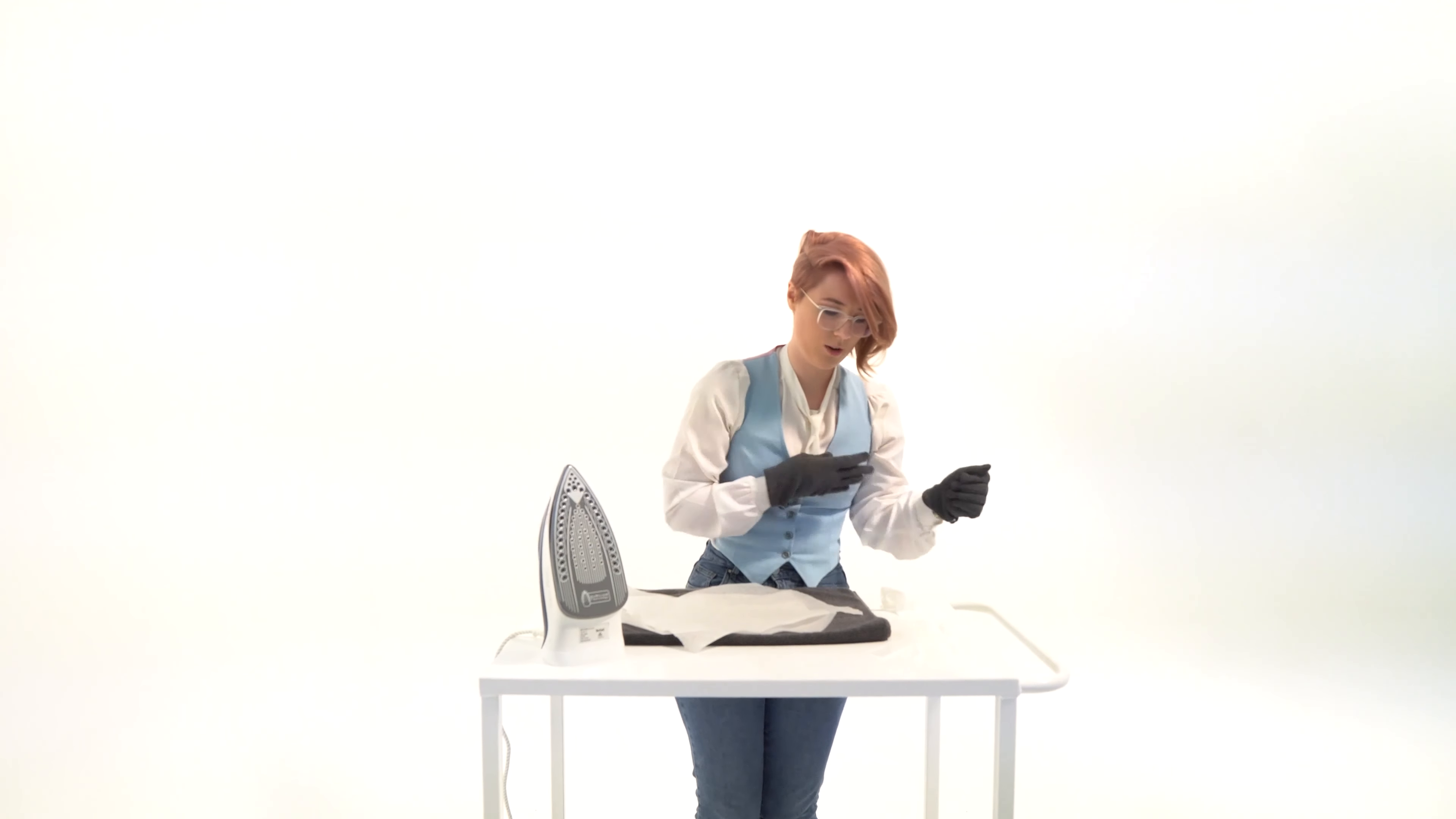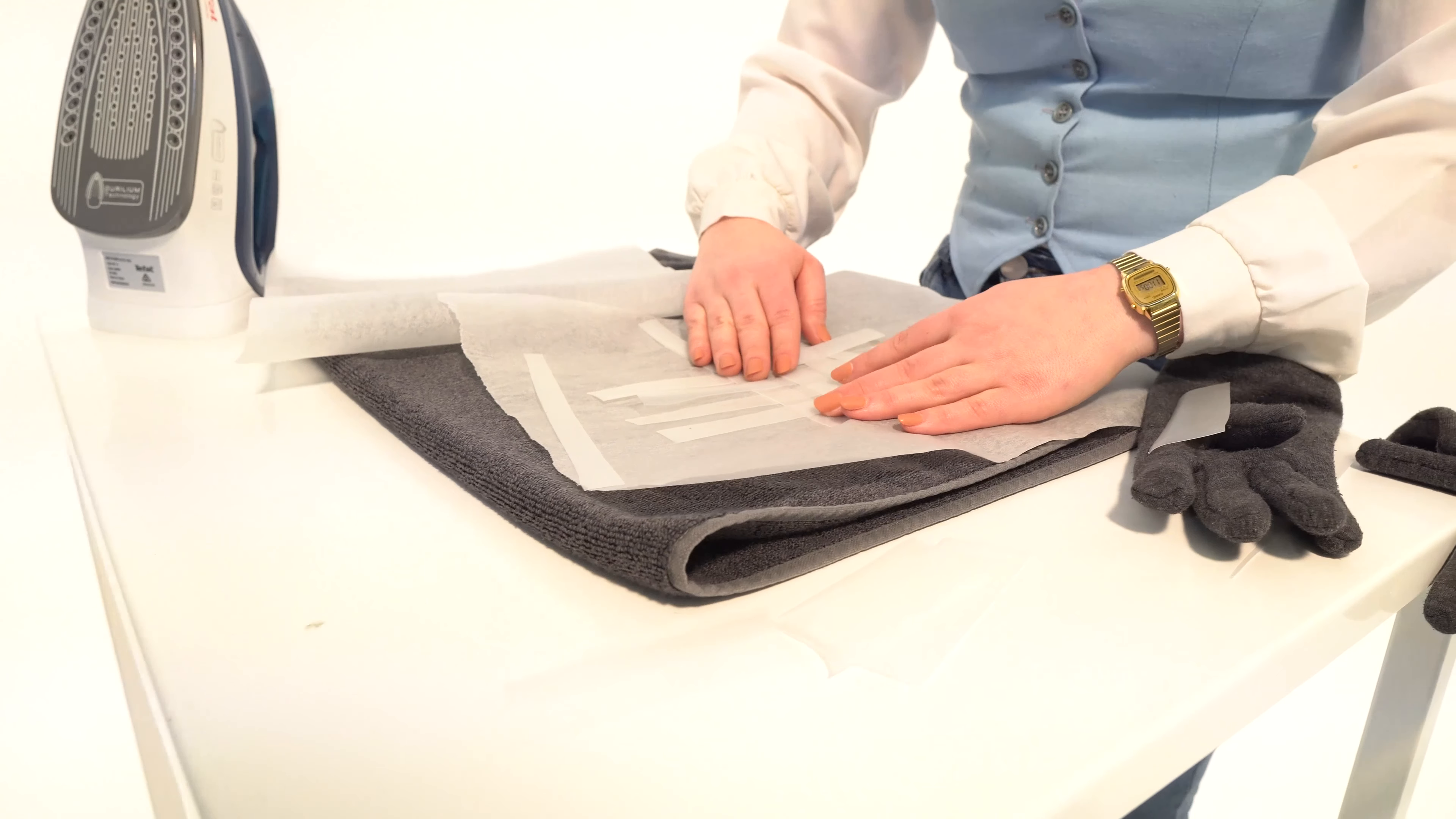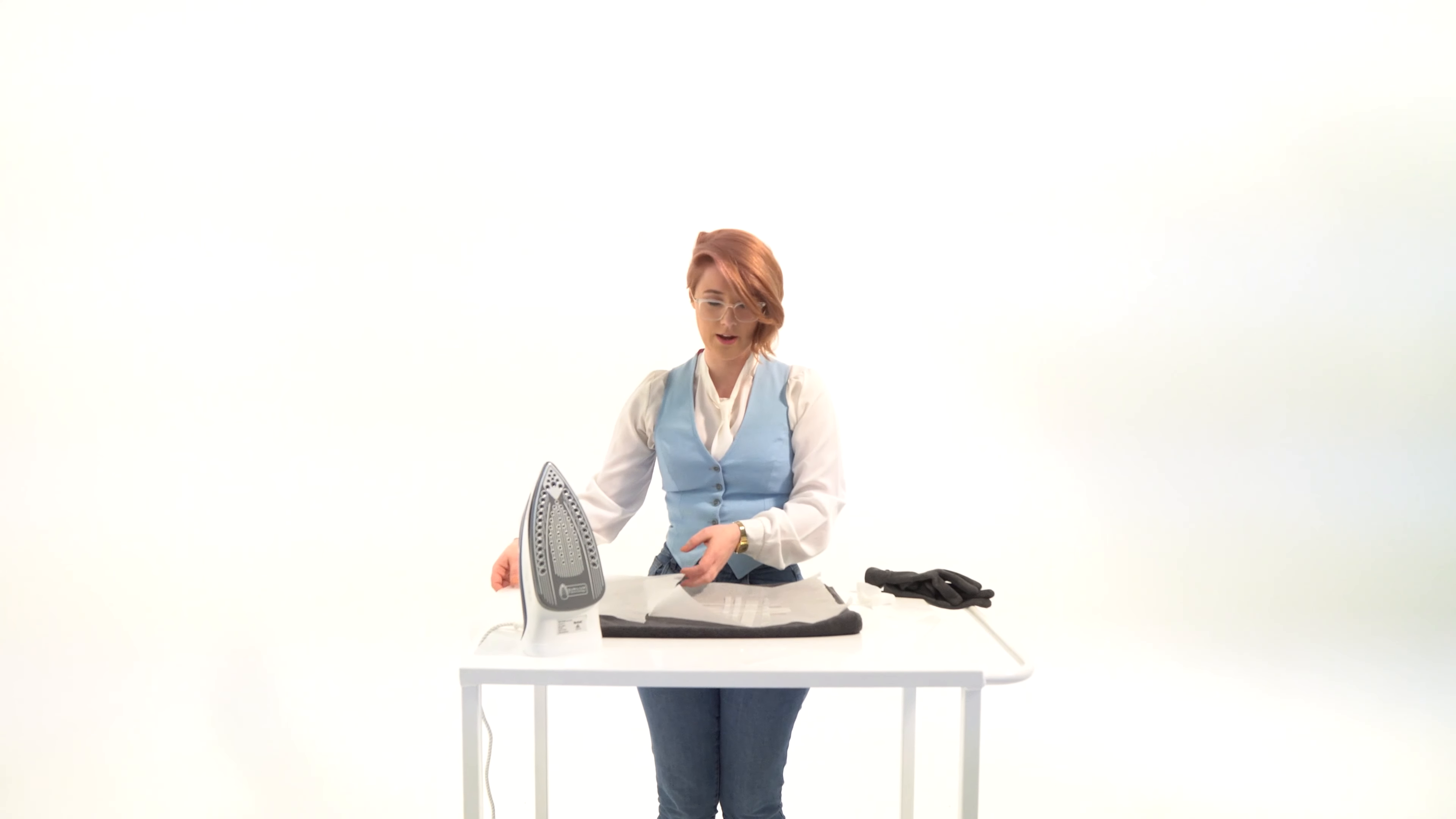You can also do things like weaving the plastic together and getting different textures through that. So if I take some of these strips that I've made and I lay them in a woven pattern, they're just an over, under, over, under, very simple one. Paper over the top. Now these are going to stick together a little bit like glue, so you just want to make sure that you're making sure it's all lined up in the way you want before when you put the iron on, because once it's stuck together it's really hard to change.